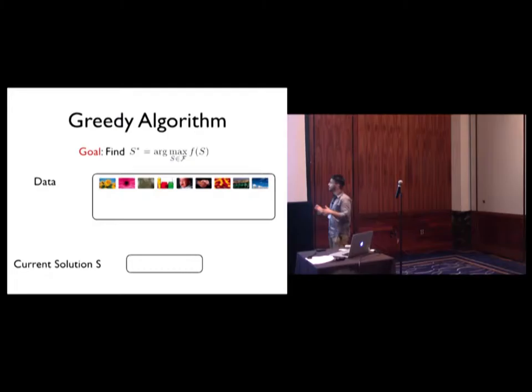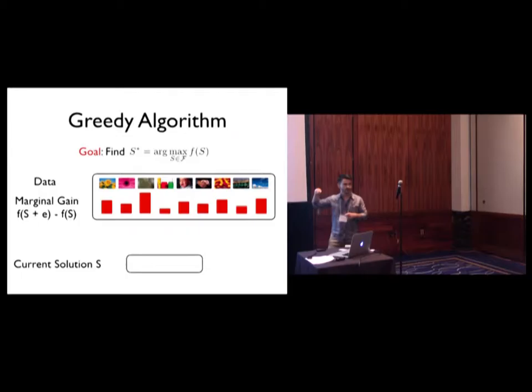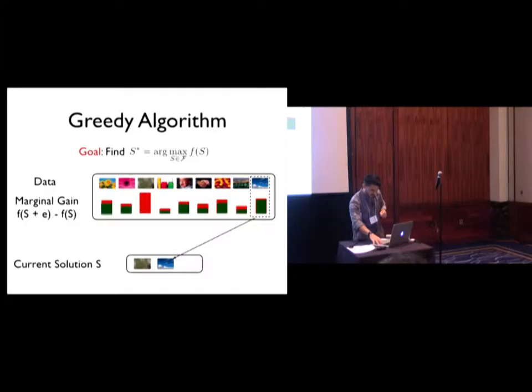Perhaps the most natural or intuitive way to solve this is through the greedy algorithm. So the greedy algorithm runs like this. We have our entire data set, and we compute the marginals. Let's say that these are the marginals. We pick the element with the largest marginal and include it in the solution. And now we recompute the marginals on top of the current solution. We again pick the one that has the largest gain. And you proceed like that for the third element until we've reached the solution.